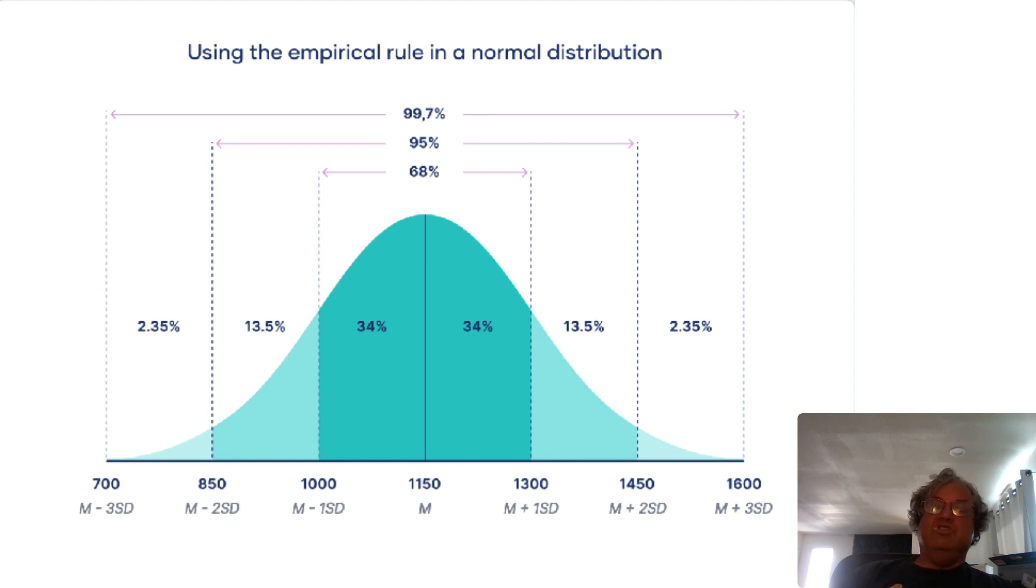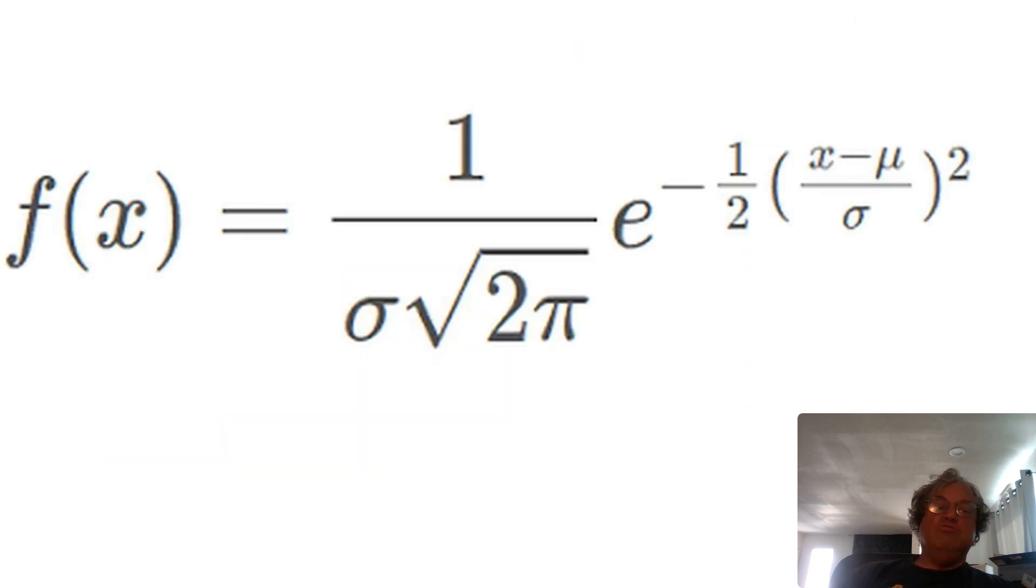But what's the formula for this curve? You might be wondering that. Well, the formula, as it turns out, remarkably, involves pi. Look at the square root of two pi in the denominator. Where did that come from? It doesn't seem like this has anything to do with circles. And not only does it involve pi, it involves a square root of pi, which I think is kind of interesting. So formulas for pi appear in a lot of weird places where you might not expect them. Gaussian distribution, that's just one example.